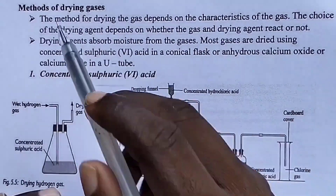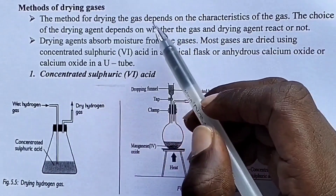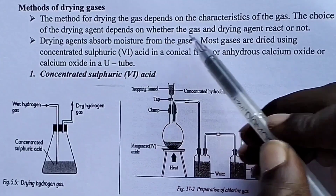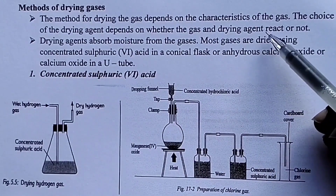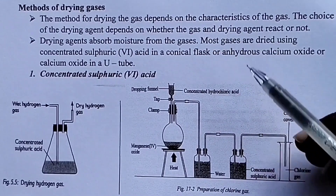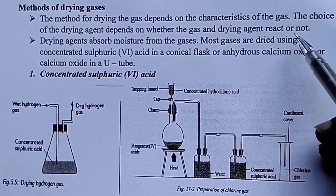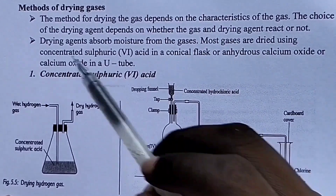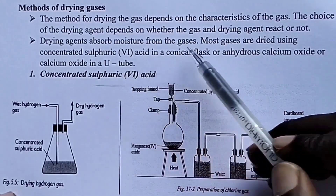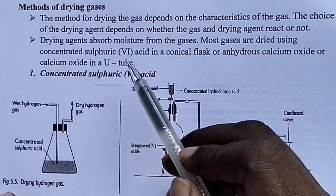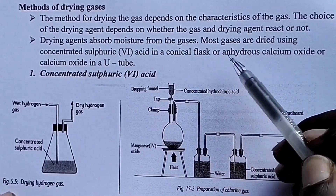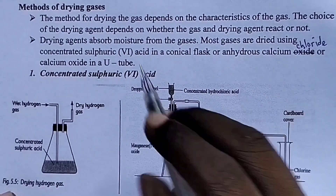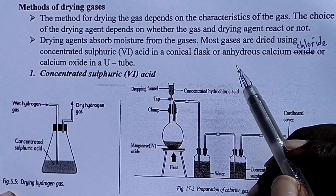Let's proceed to methods of drying gases. The method for drying a gas depends on the characteristics of the gas. The choice of drying agent depends on whether the gas and the drying agent react. If they react, the gas cannot be dried using that drying agent. If the gas does not react with the drying agent, we can use it to dry that gas. Drying agents absorb moisture from gases. Most gases are dried using concentrated sulfuric acid in a conical flask, or anhydrous calcium chloride or calcium oxide in a U-tube. We have three drying agents in the lab.